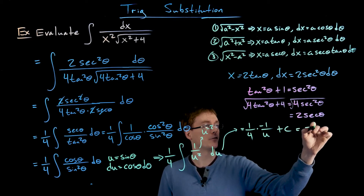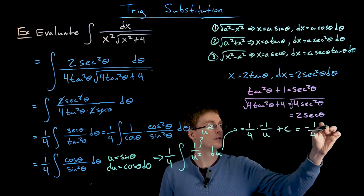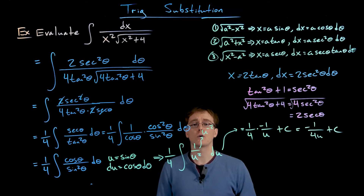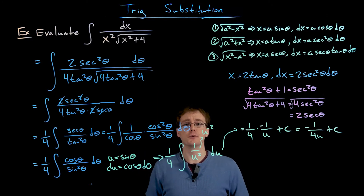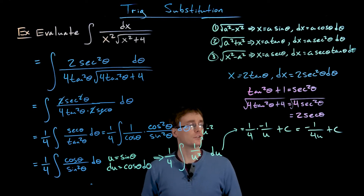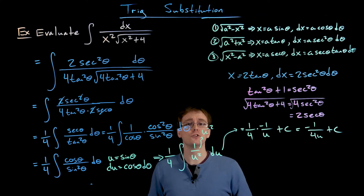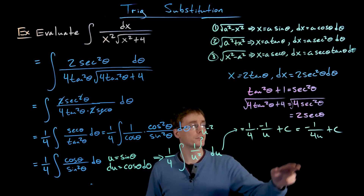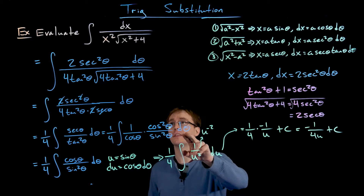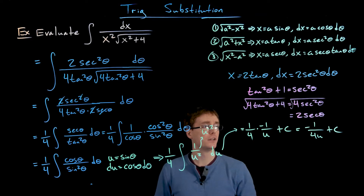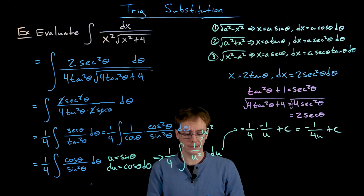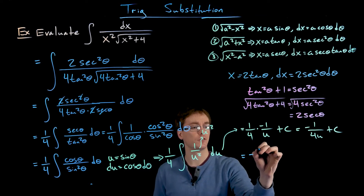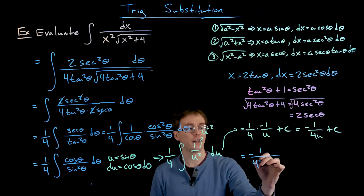Rewriting a little more cleanly, our antiderivative in terms of u is negative 1 over 4u plus C. But our original question was in terms of x, so we need to back-substitute. We first go from u to theta, then from theta back to x. Since u equals sine of theta, our antiderivative becomes negative 1 over 4 times sine of theta plus C.